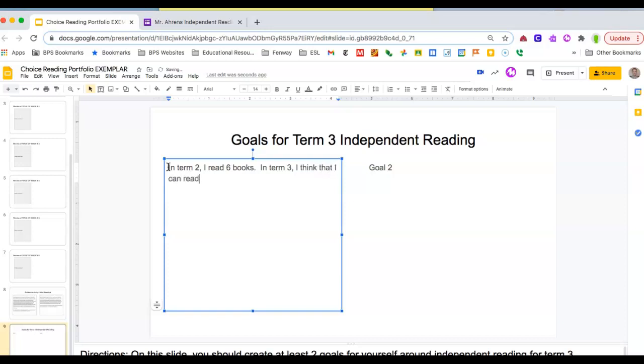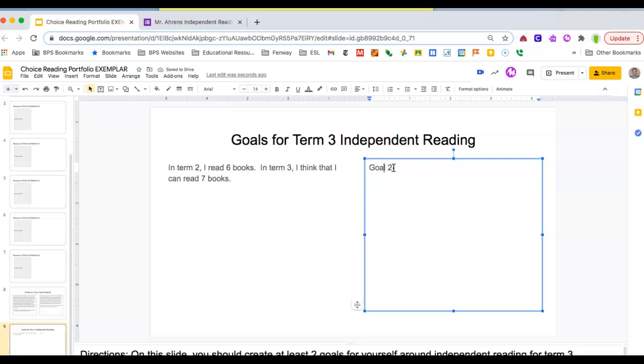I want to be as specific as I can be, so like in goal 1, I say I read six books and in term 3, I want to increase that to seven books.